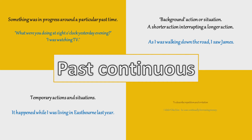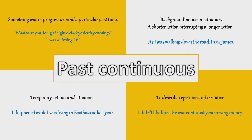And the last rule: to describe repetition and irritation. For example: I didn't like him — he was continually borrowing money. This is something repeated in the past, but not as a habit. It's something that was more annoying.